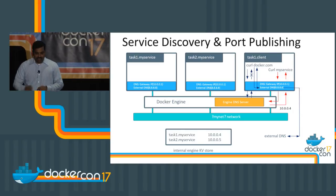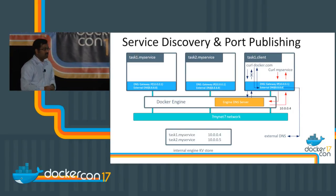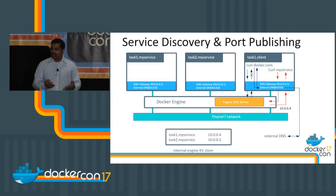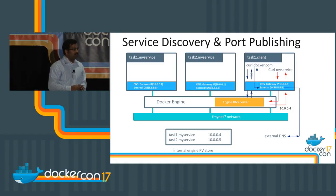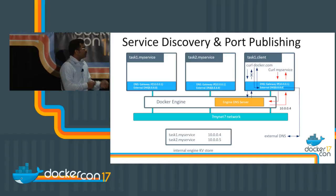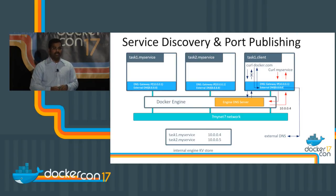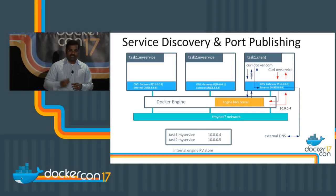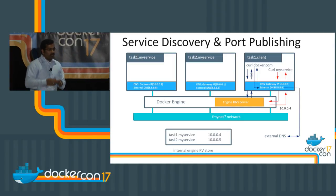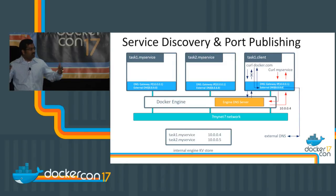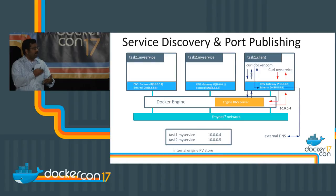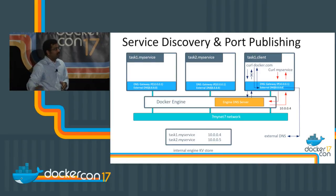On port publishing: Docker supports two modes — routing mesh and host mode. Routing mesh is not yet available in Windows; we're currently working on it. We do support host mode port publishing — on each host, you can publish the port for the service running on that container host using the publish option and specifying the mode as host. With host mode publish, you can program your external load balancer to hit all the host mode ports as your backend servers.